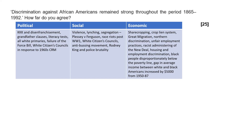Politically: the Ku Klux Klan, disenfranchisement, grandfather clauses, literacy tests, all-white primaries, failure of the force bill, and white citizens' councils responding to the 1960s civil rights movement. Socially: violence, lynching, segregation, Plessy v. Ferguson, race riots post-World War I, white citizens' councils, the anti-busing movement, Rodney King, and police brutality in the 1990s. Economically: sharecropping, the crop lien system, the Great Migration north — but even in the north, facing economic discrimination, unfair employment practices, racist administering of the New Deal, and housing and employment discrimination. In places like Chicago, black people were disproportionately below the poverty line. The gap in average income between white and black Americans increased by $5,000 from 1950 to 1987, despite civil rights activism in the 1960s.